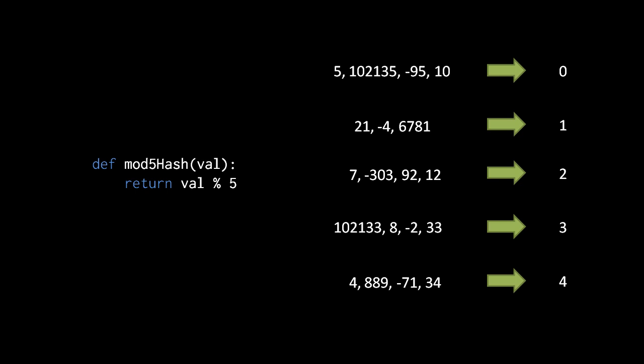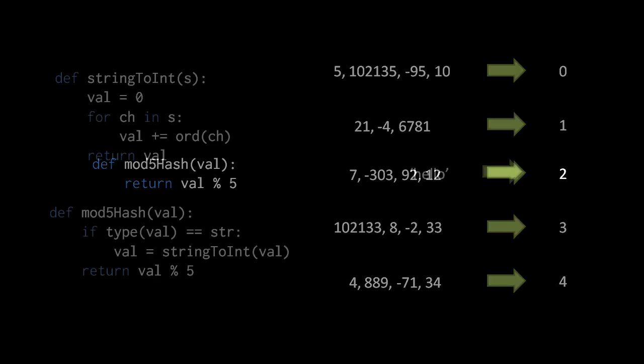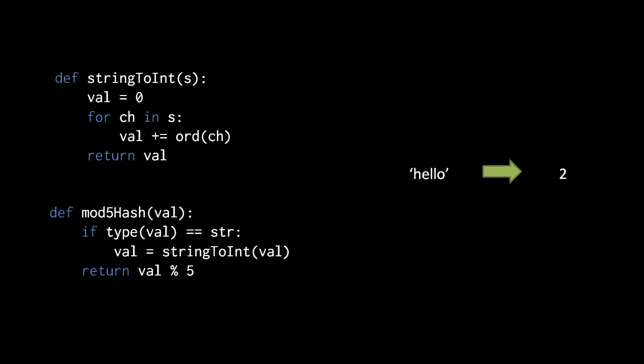A downside of using a simple modulus is that it can only be applied to integer inputs. Ideally, we want a hash function which can take as input any kind of object. We could modify our hash function to accept strings as input. Here we have a function string to int which takes an input string s, and then it loops over the individual characters of the string, gets the numeric character code value of each character, and adds that value to a sum. The ord function is a built-in Python function which translates a single character string into the ordinal value, the numeric value of that character. Once we have this function, we can first test if the type of the value is a string, and if it is, then we convert the input value to an integer using the string to int function, then take the modulus.